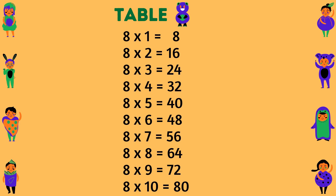Table of 8. 8 times 1 equals 8. 8 times 2 equals 16. 8 times 3 equals 24. 8 times 4 equals 32. 8 times 5 equals 40. 8 times 6 equals 48. 8 times 7 equals 56. 8 times 8 equals 64. 8 times 9 equals 72. 8 times 10 equals 80.